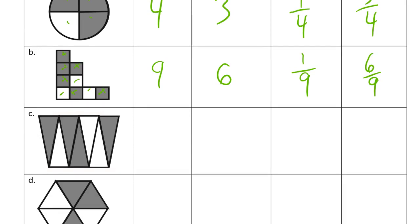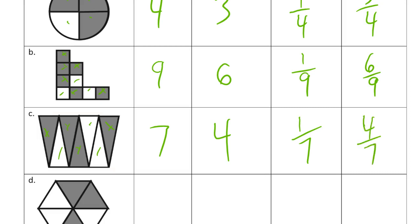Here we have one, two, three, four, five, six, seven — seven equal parts. And there are one, two, three, four shaded in. Since there are seven equal parts, we are counting sevenths. So our unit fraction is one-seventh. And since there are four shaded in, four-sevenths of the shape is shaded in.